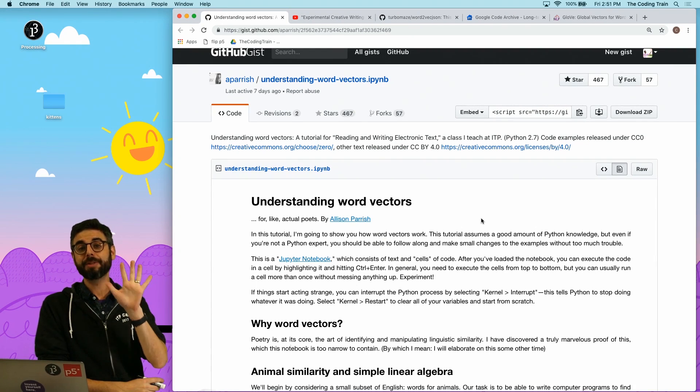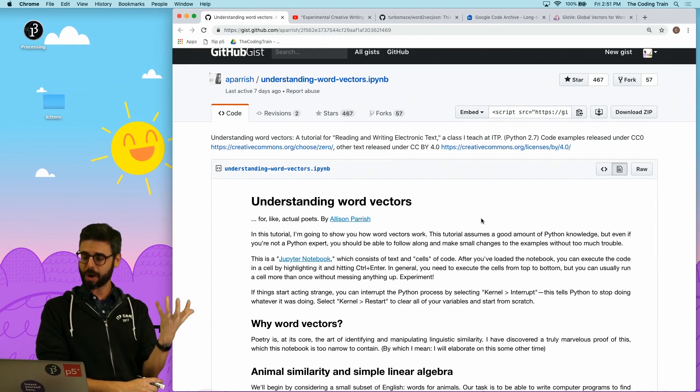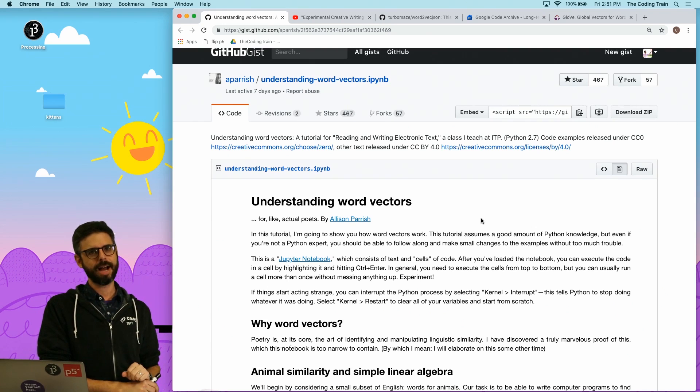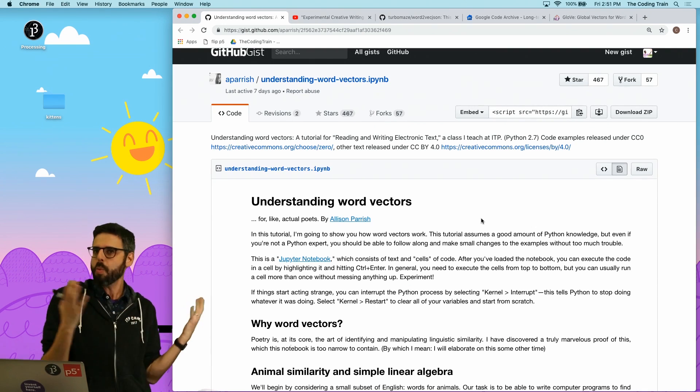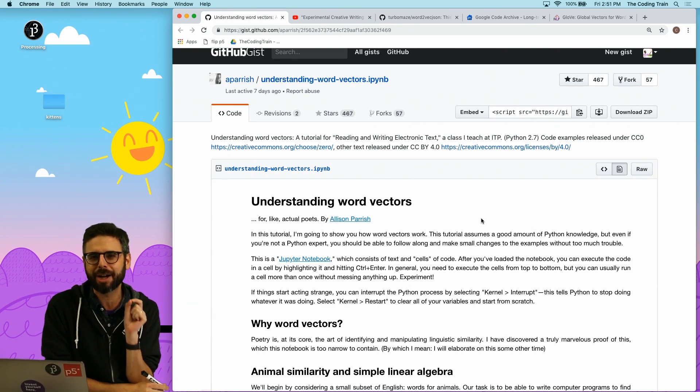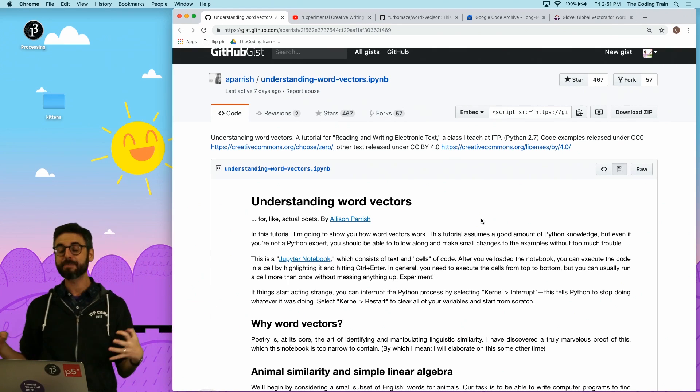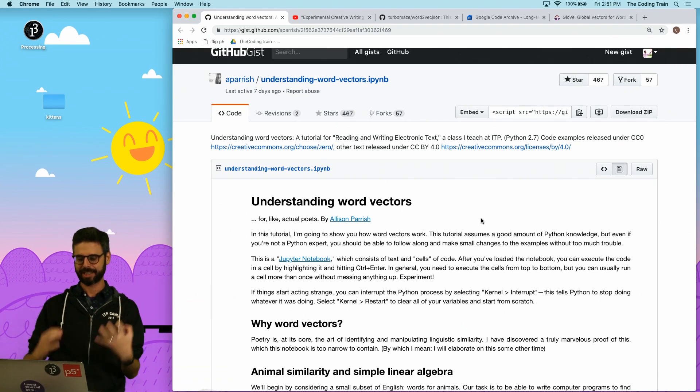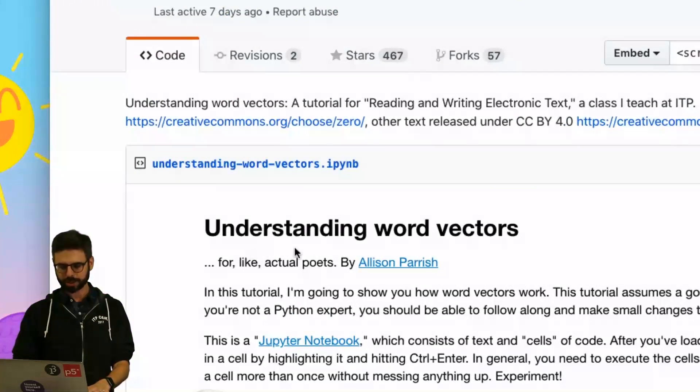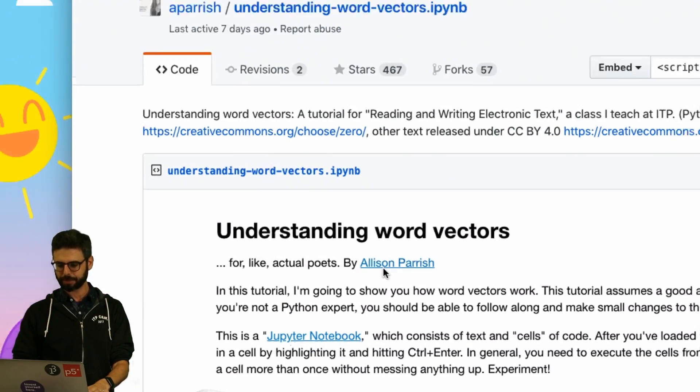So first of all, I want to mention something very important. I've known about Word2Vec and I've used it in projects for a little while, but I don't think I ever really understood it. And I don't even know that I really do understand it, but I definitely improved my understanding of it vastly after reading this amazing tutorial by Alison Parrish. It's posted as a gist on GitHub, it's a Python notebook, Understanding Word Vectors by Alison Parrish.